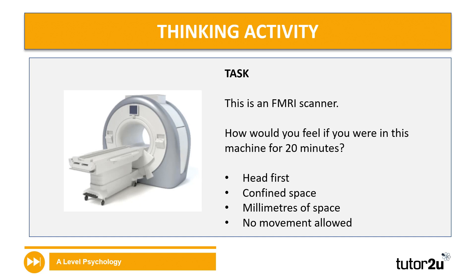Similar to earlier, let's think about how you would feel if you were in an fMRI machine for 20 minutes — sometimes scans can take much longer. Think about going head first into this machine: once you're in there, it's a very confined space. There will be millimeters between your nose, your head, and the machine itself. No room to move your arms, and no movements allowed whatsoever, because movement could really distort the image coming out of the scan. Pause the video for 60 seconds, imagine that scenario, and think about how you yourself would feel.